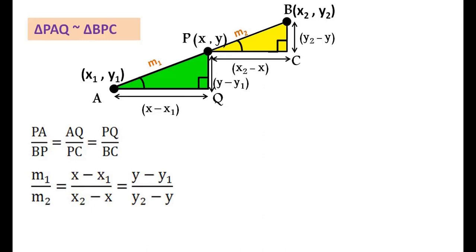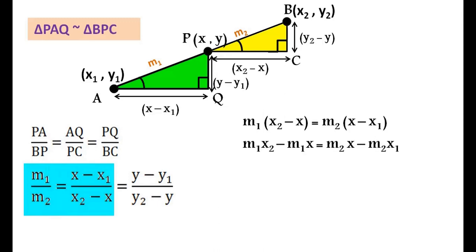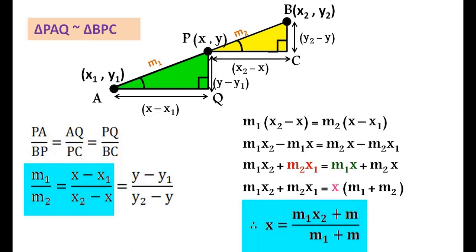First, we will take the first two ratios and cross-multiply, which gives us M₁(x₂-x) = M₂(x-x₁). Now bring M₂x₁ to the left-hand side and M₁x to the right-hand side. We can take x common from the right-hand side. In the bracket, only M₁ + M₂ is left. Finally, we get x = (M₁x₂ + M₂x₁)/(M₁ + M₂).